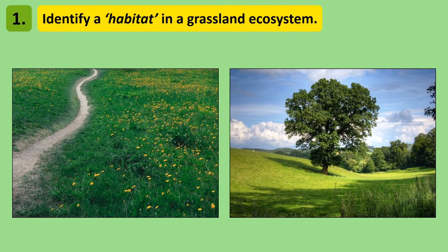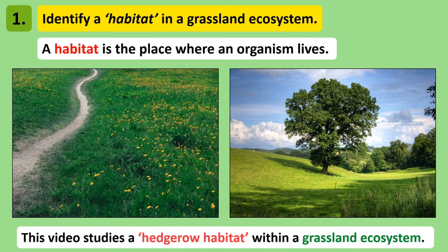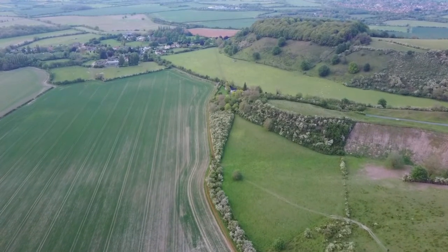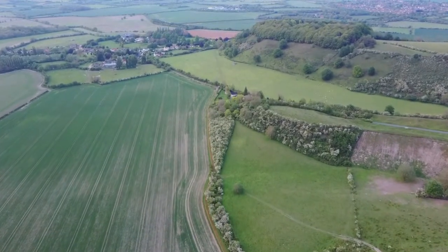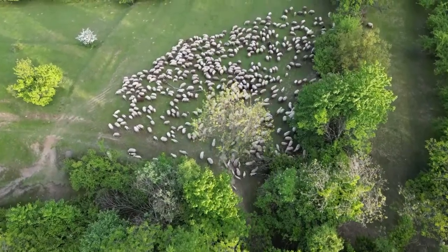Continuing on from our part one video on ecology, we learned that ecosystems are large areas where living things interact with each other and their environment. Ecosystems such as a grassland ecosystem are usually very large areas, so for the purpose of our studies we survey a small part of an ecosystem called a habitat. A habitat is the specific place in an ecosystem where an organism lives, and in this video the habitat we study is called a hedgerow habitat. Most of Ireland's agricultural land is fields of grassland that farmers use to feed their livestock, and spanning the edges of these fields are hedgerows — all around these bushes and trees is where we concentrate our habitat study.